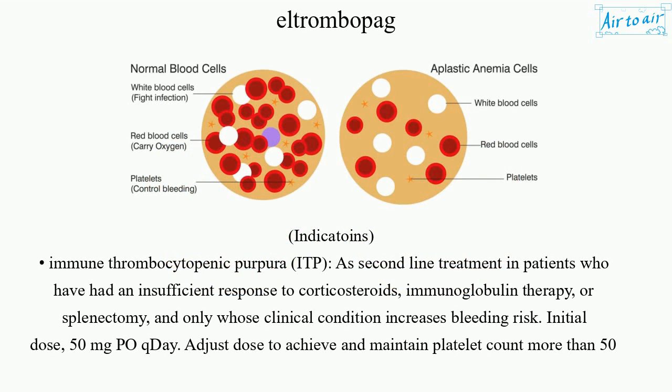Indications: immune thrombocytopenic purpura (ITP) as second-line treatment in patients who have had an insufficient response to corticosteroids, immunoglobulin therapy, or splenectomy, and only those whose clinical condition increases bleeding risk.